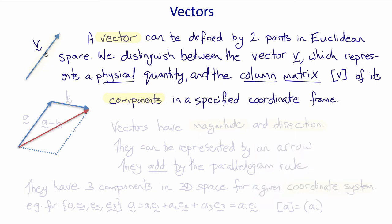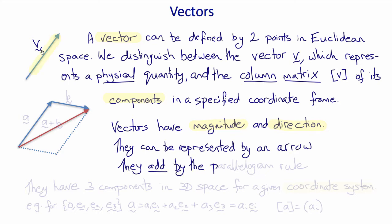A vector such as this one has magnitude and direction and can be represented by an arrow. Two vectors add by the parallelogram rule.